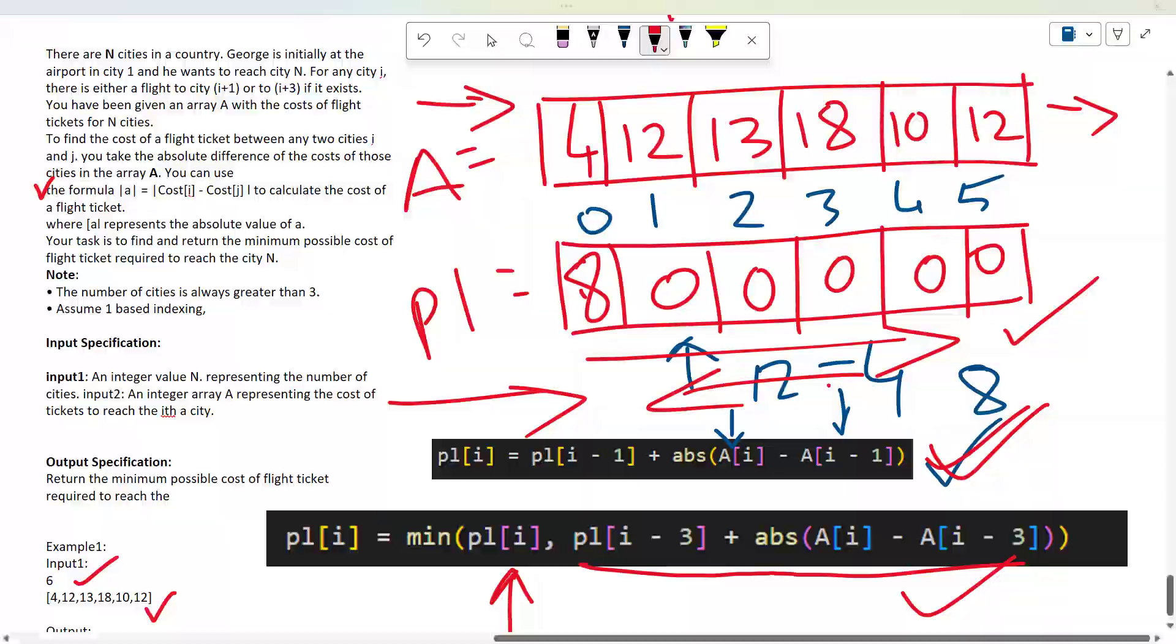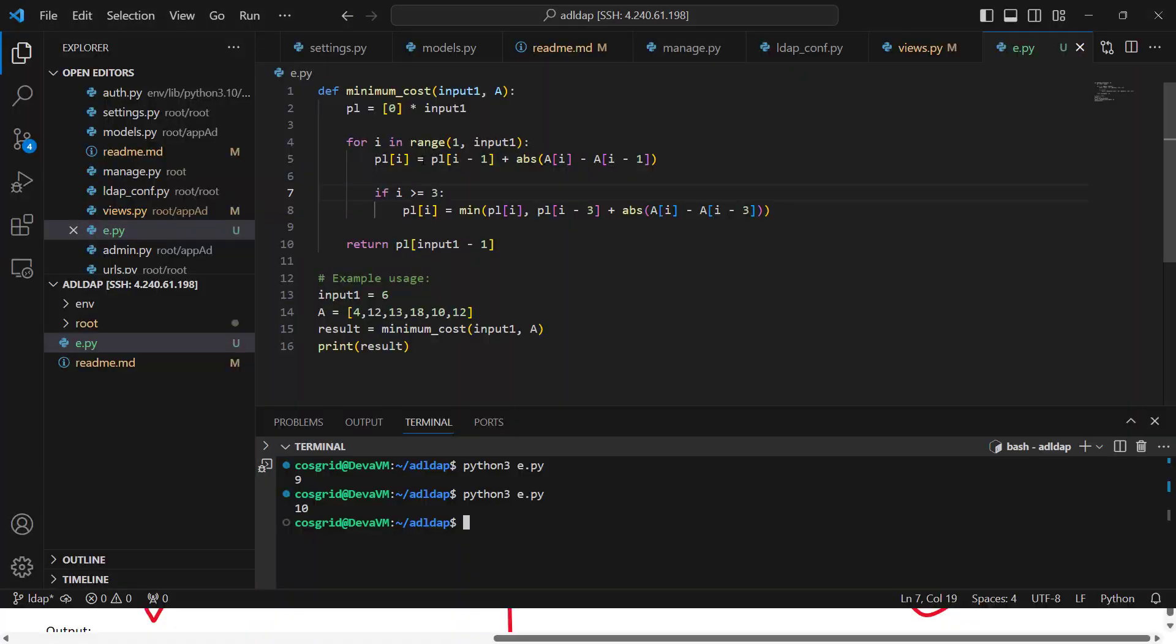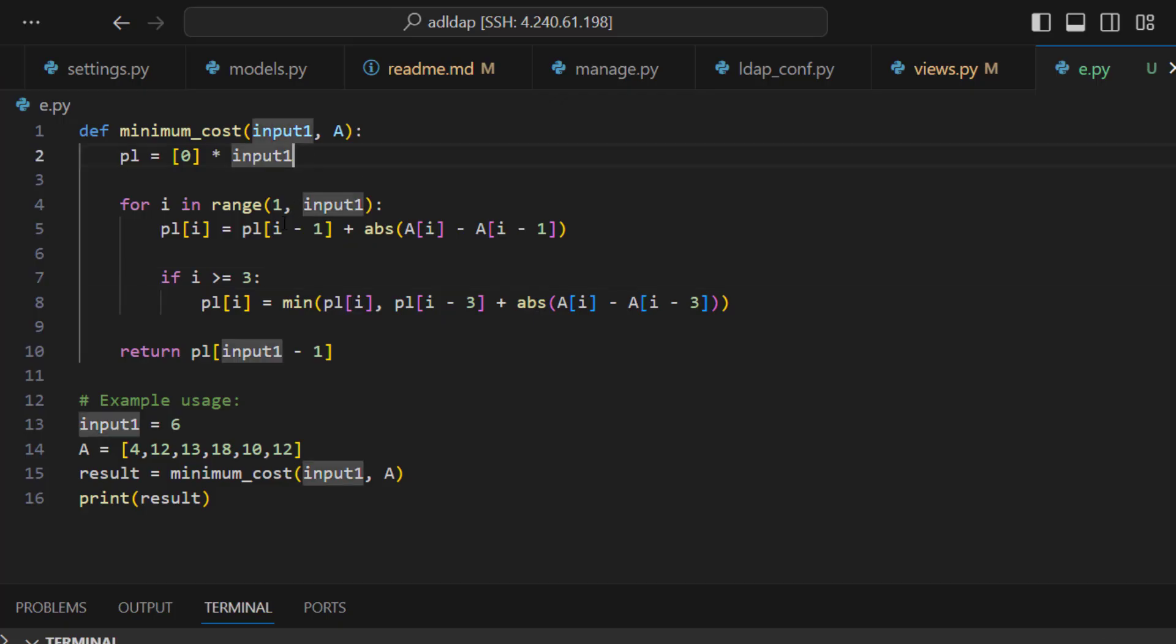If we see the code I mentioned here, first we declare one array p with all zero values with input N. We start with step 1, which is city 1, because in city 1 we can get back to city 0. For every city, I'm getting back one city and finding the price and keeping it in this p array.